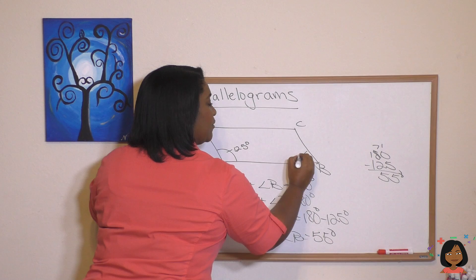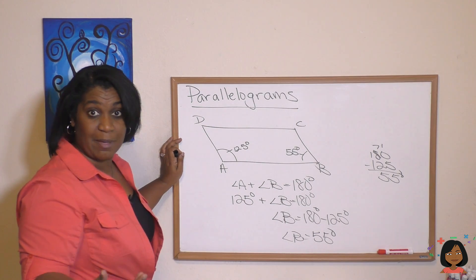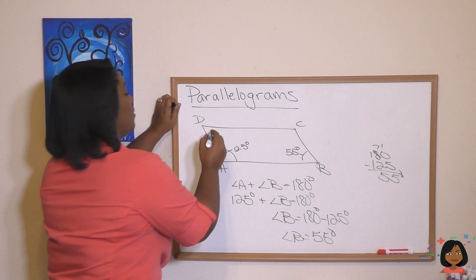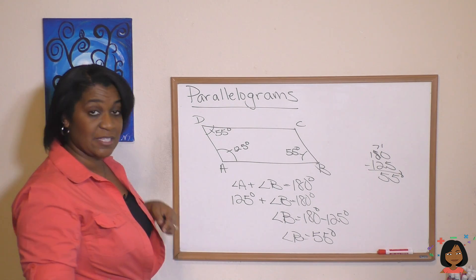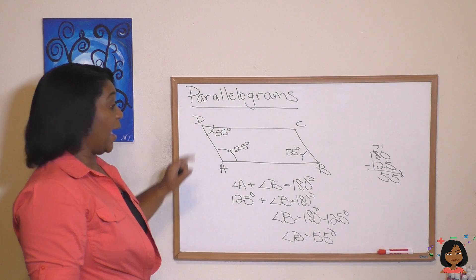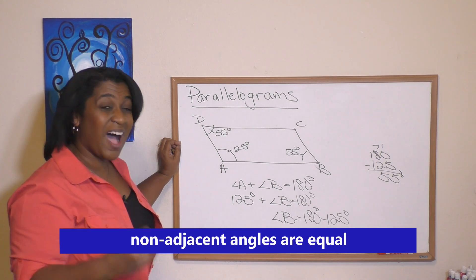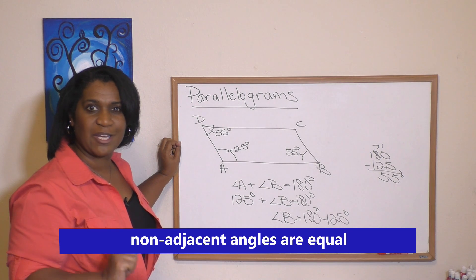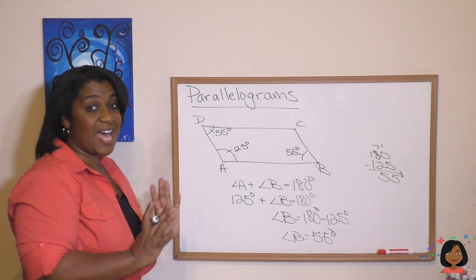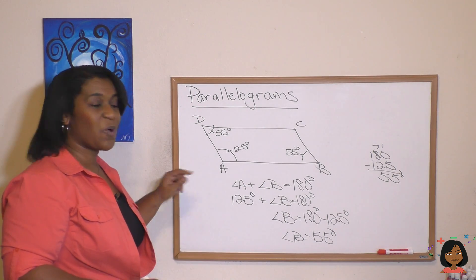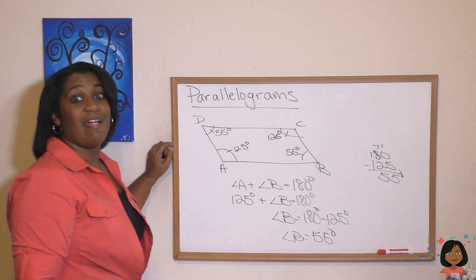Let's write that in — 55. Since the adjacent angles to angle A are supplementary, that also means angle D equals 55 degrees. Now, the second thing to know is that non-adjacent angles of a parallelogram are equal. The non-adjacent angle to A is angle C, so angle C equals 125 degrees.